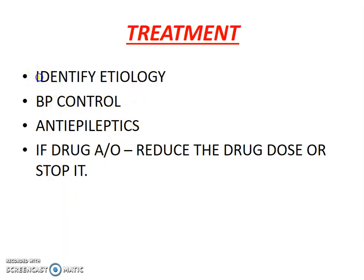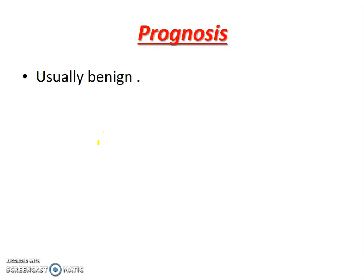Treatment is basically supportive. Identify the etiology and control blood pressure — the target blood pressure and how to reduce it in CNS emergencies will be discussed in a separate video. Anti-epileptic drugs can be given. If drug-associated PRES is suspected, reduce the drug dose and stop the drug if possible. The patient usually improves. Prognosis is generally good.